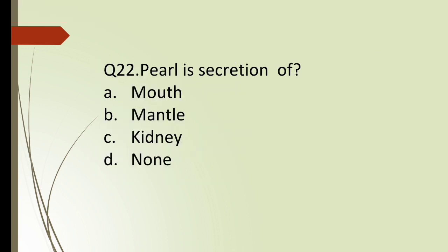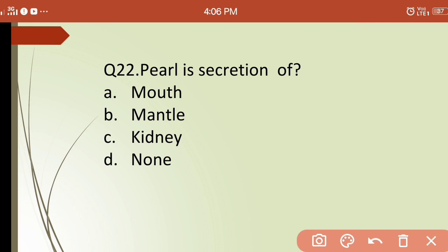Twenty-second question: pearl is a secretion of? Options are: (a) mouth, (b) mantle, (c) kidney, (d) none of these. The correct answer is (b) — pearl is a secretion of the mantle.